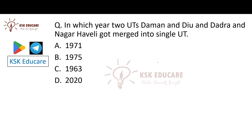Next question: In which year were the two union territories — Daman and Diu, and Dadra and Nagar Haveli — merged into a single union territory? Option A is 1971, Option B is 1975, Option C is 1963, and Option D is 2020.